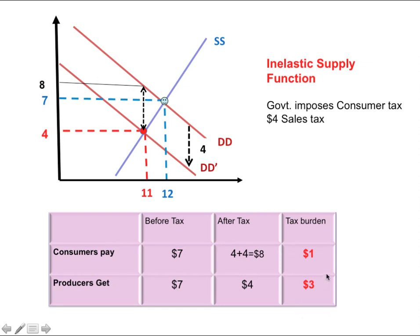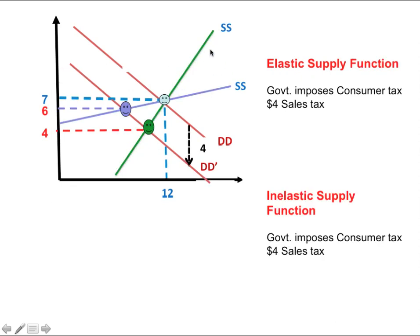The tax burden is completely reversed in this case — producers pay a bigger share of the taxes than consumers. The reason is the inelastic supply function, meaning supply is not very responsive to changes in prices. With the same four dollar sales tax shifting the demand function down by the same amount, the inelastic supply (green) caused the market price to fall by much more than in the elastic supply (purple) case, resulting in a much greater tax burden on producers. Thank you, hope this helps.